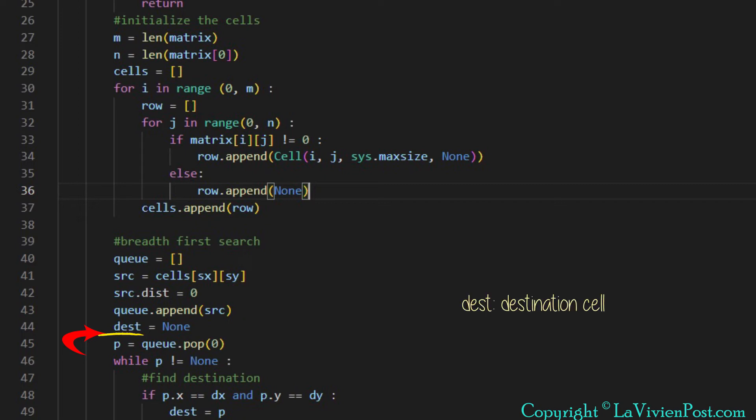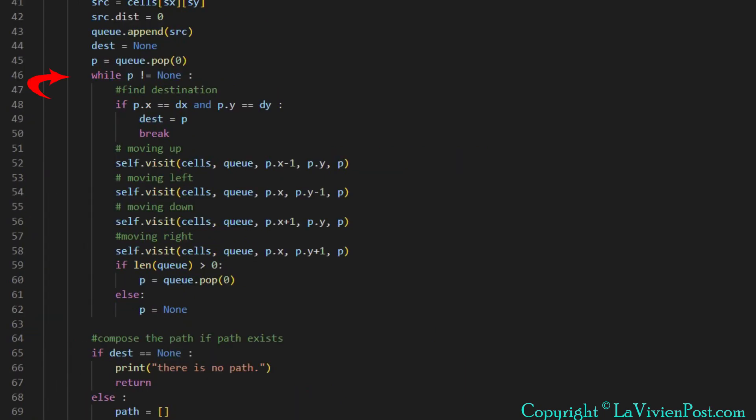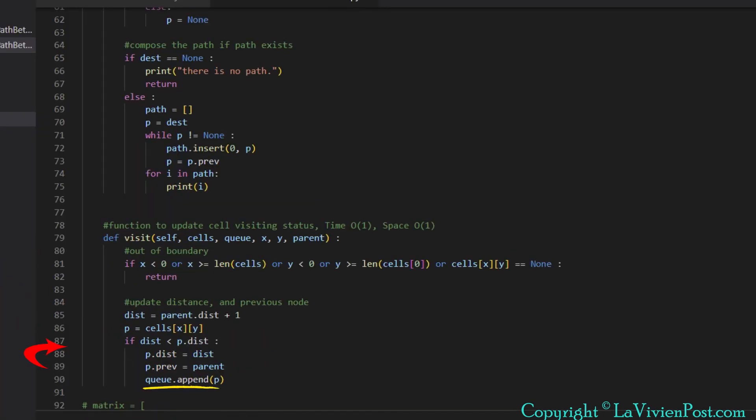Dest will store the destination if it is found, and p is the pointer to current cell in process. Inside the while loop, pop or dequeue the node from the queue. If the node is the destination, we can exit from the loop. Otherwise, visit each four adjacent cells by calling the visit function. Inside the function, we enqueue each valid cell in the queue with plus one distance and also save the parent cell in prev.